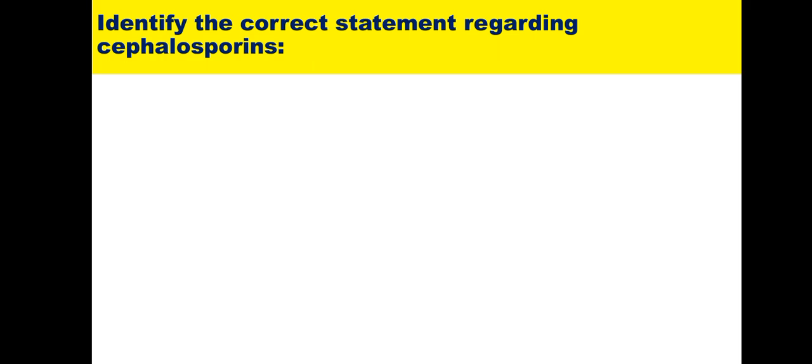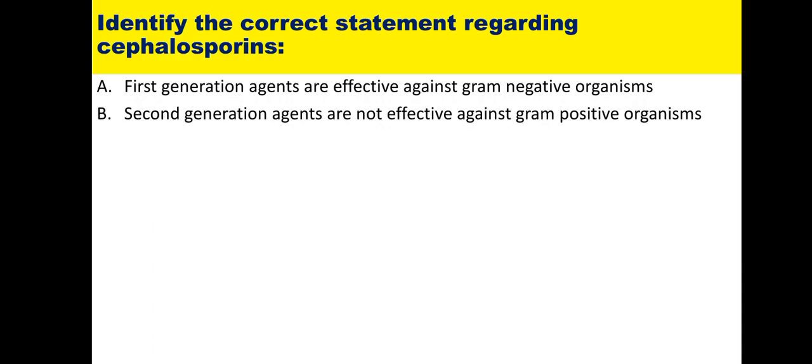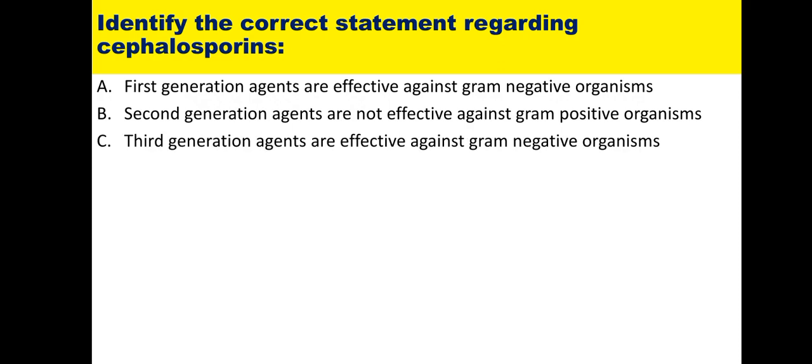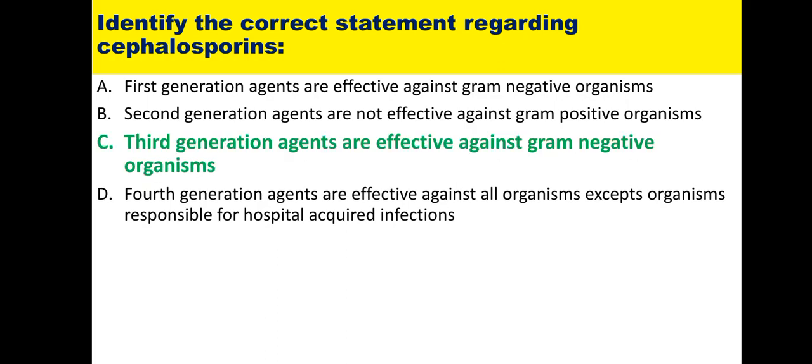Thirteenth: identify the correct statement regarding cephalosporins. First generation agents are primarily effective against gram-positive organisms. Second generation are effective against gram-positive and somewhat gram-negative. Third generation are exclusively gram-negative. Fourth generation are effective against notorious hospital-acquired infections and related organisms. So the correct option is: third generation agents are effective against gram-negative organisms.